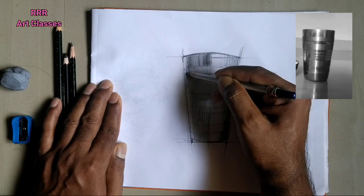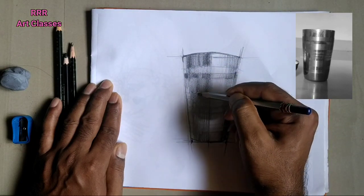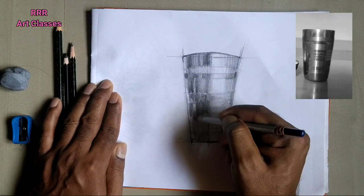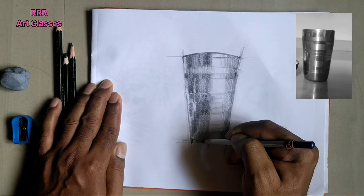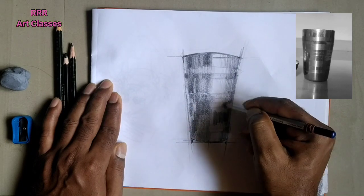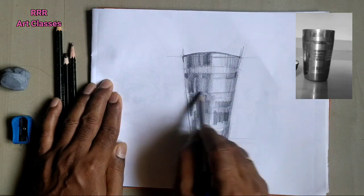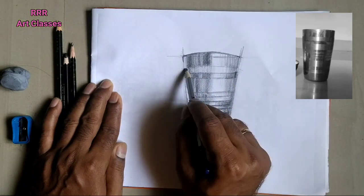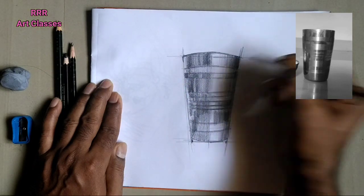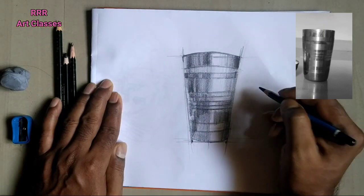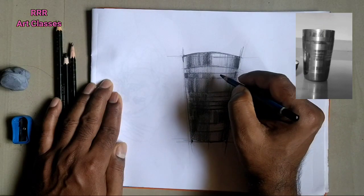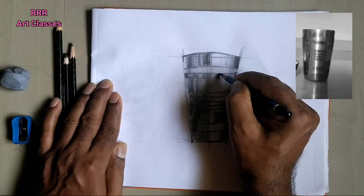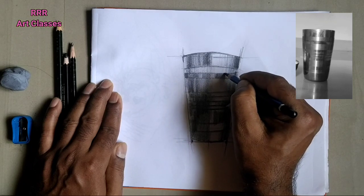Now you add some values that we have discussed in the earlier video on how to add tonal variation. And you can see in the reference, wherever the dark portions are there I am adding dark strokes. And wherever the light, very highlight portions are there, I am leaving those portions without touching them. Otherwise you can also erase them later on. If you are not able to leave them, then you can erase them also.